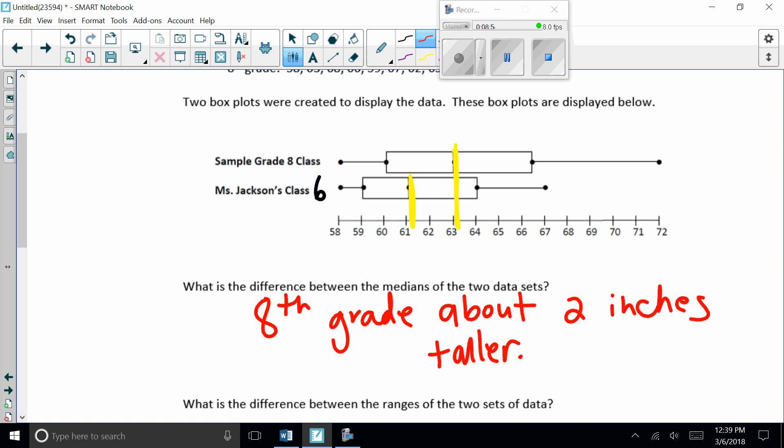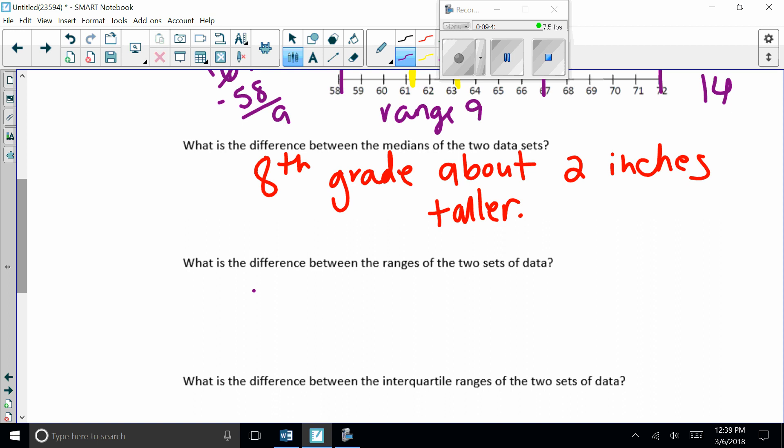So our second one wants to know what is the difference between the ranges of the two sets. So before we can find the difference of the ranges, we've got to find the ranges themselves. So if we go back to our graphs, let's look at eighth grade. They are roughly going to be about 58 and these guys are roughly 72. So 72 minus my 58, you're going to get a range of 14. If I come down and I look at my sixth graders, 58 and we're going to be about 67. So 67 minus 58 is going to be about 9. So it wants to know the difference between these two. So I'm going to take my 14 and I'm going to subtract 9. And it's going to give me 5.